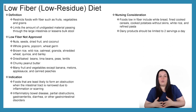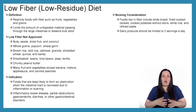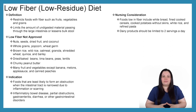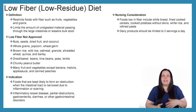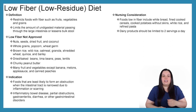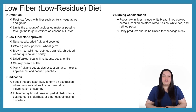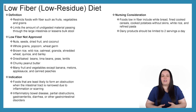Additional foods not approved on a low fiber, low residue diet include barley, dried baked beans, lima beans, peas, lentils, chunky peanut butter, and many fruits and vegetables — except bananas, melons, applesauce, and canned peaches.